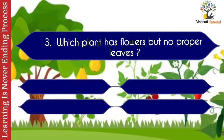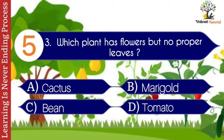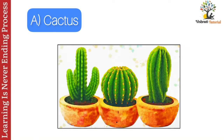Question number three: which plant has flowers but no proper leaves? Options: A. Cactus, B. Marigold, C. Bean, D. Tomato. The correct answer is A. Cactus. Cactus is a plant which has flowers but no proper leaves.